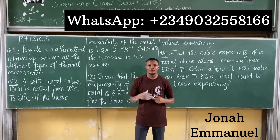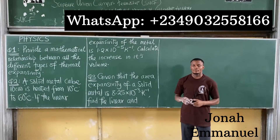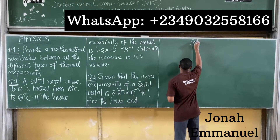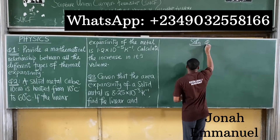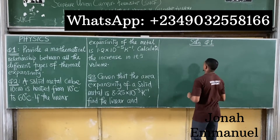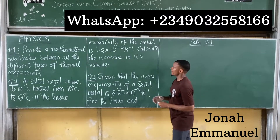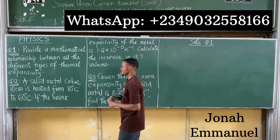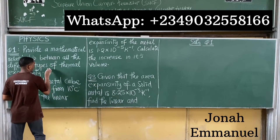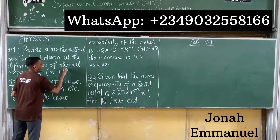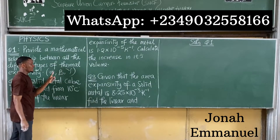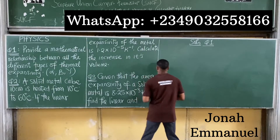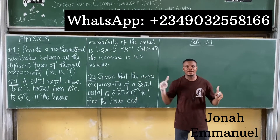Alright, let me solve question one. The question says: provide a mathematical relationship between all the different types of thermal expansivity — that means linear expansivity, area expansivity, and gamma expansivity. We have to provide just one equation that connects all of them. Note that linear expansivity is alpha, area expansivity is beta, and volume expansivity is gamma.